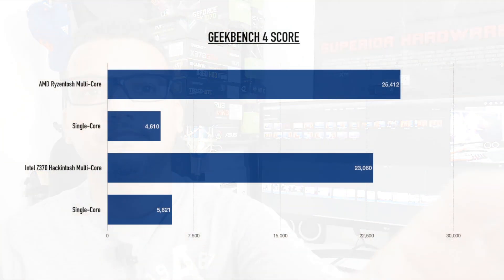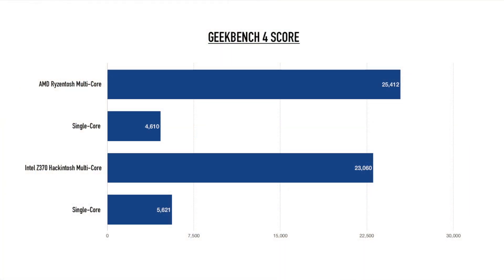Starting with Geekbench 4, I compared my Ryzen hackintosh with my Intel Z370 hackintosh running an i5-8400 — a 6-core CPU without hyperthreading. The Ryzen hackintosh multi-core score is around 25,412 and the single-core score is around 4,610. The Intel Z370 hackintosh multi-core score is around 23,060, and the single-core score is higher at 5,621. Remember, single-core score does matter.